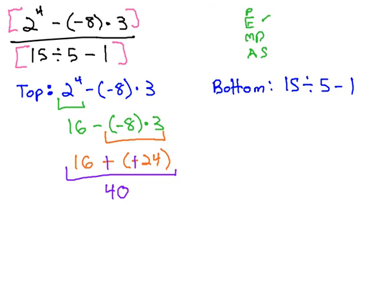The bottom or the denominator following much the same pattern, order of operations says to divide first. That's going to give us 3 minus 1 and 3 minus 1 is 2.